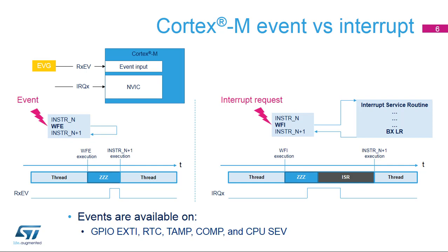The Cortex-M supports two ways to enter a low power state. One: executing the wait-for-event or WFE instruction. Or two: executing the wait-for-interrupt or WFI instruction. With WFE, the first instruction executed after a wake-up event is the next sequential one — INSTR N plus 1 in the sequence on the left. By implementing WFI, the processor jumps to the interrupt service routine when an enabled interrupt request is received.